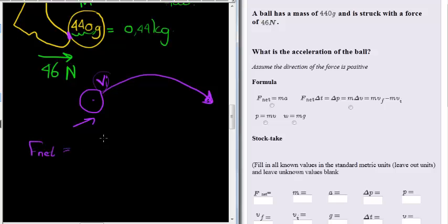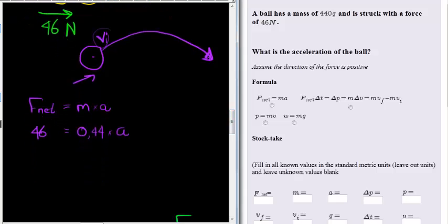We have this formula that we use when force is applied to a mass to generate an acceleration: mass times acceleration. The net force is 46 newtons, the mass is 0.44 kilograms, and the acceleration is unknown. So how are we going to calculate that?